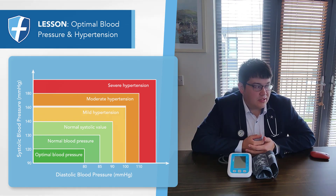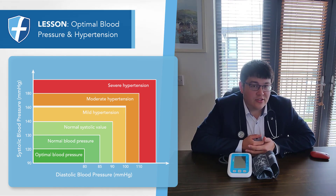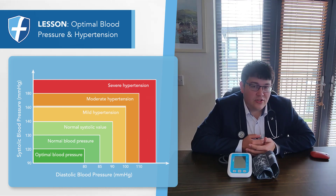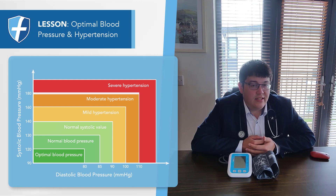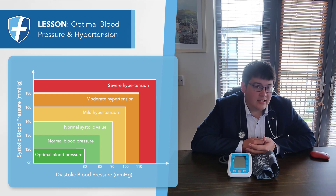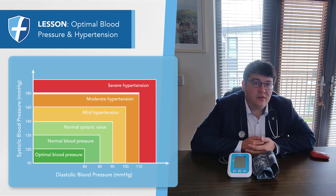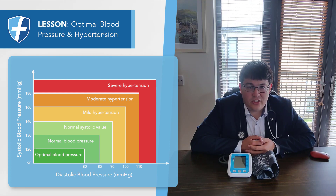Grade 2 hypertension is having a systolic blood pressure between 160 and 179 or a diastolic blood pressure between 100 and 109. Grade 3 hypertension is having a systolic blood pressure of 180 or more or a diastolic blood pressure of 110 or more, and if you have a blood pressure measurement in this range, you should seek urgent medical attention.